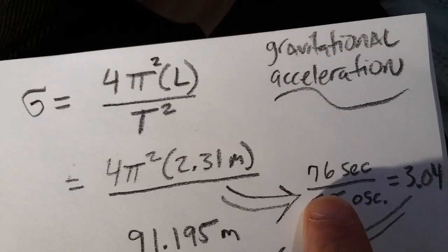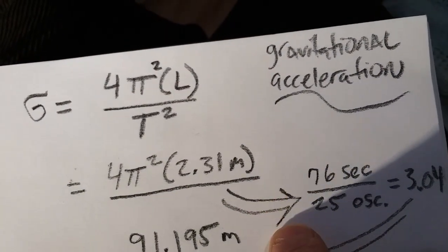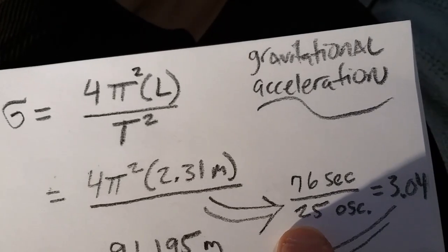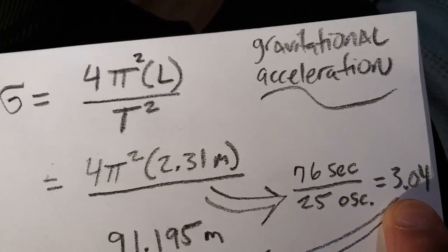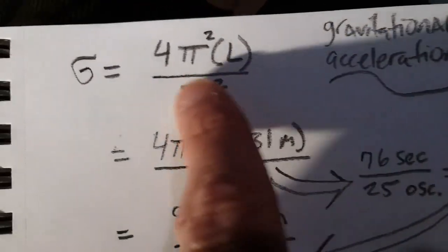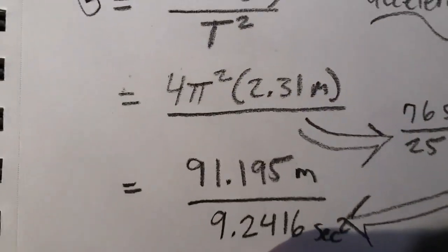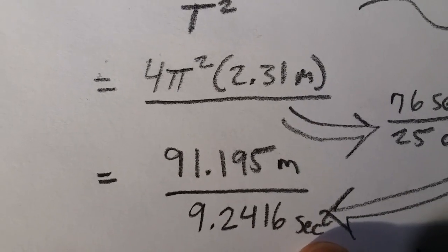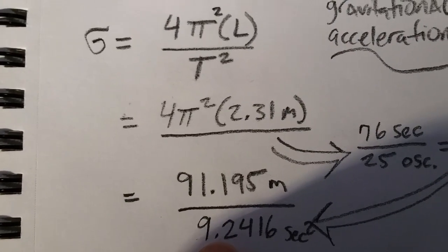25 oscillations took 76 seconds, so you divide 76 by 25, in my case, and you get 3.04. And that's going to be the time squared, which equals 9.2416 seconds squared.